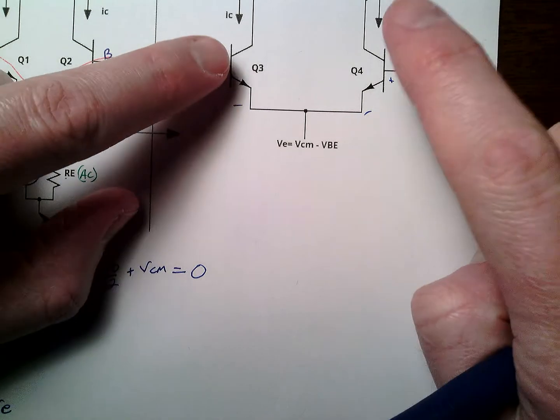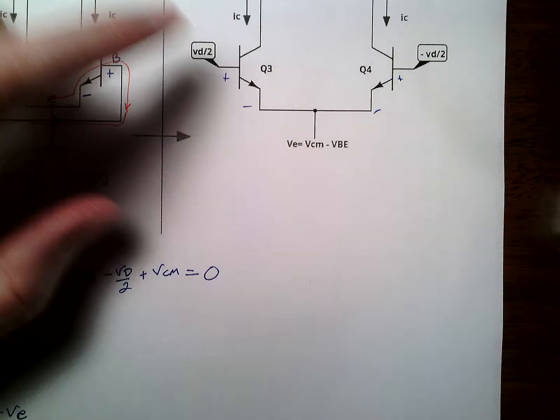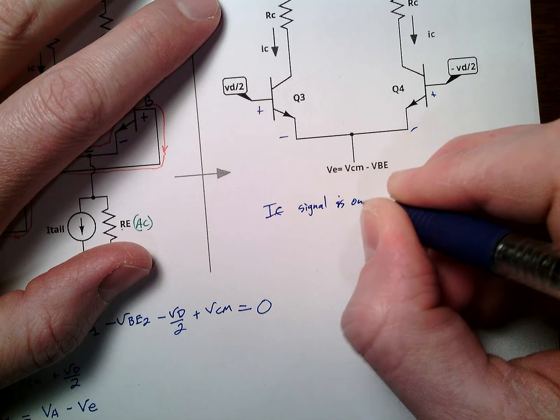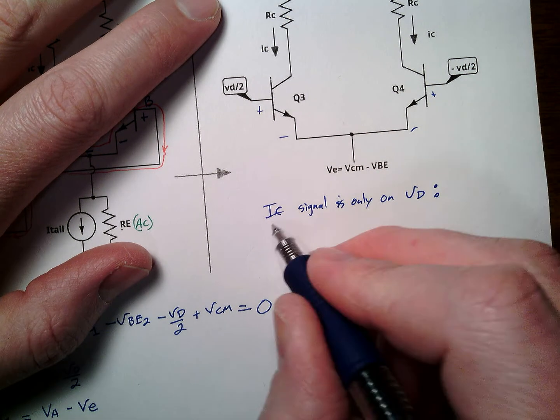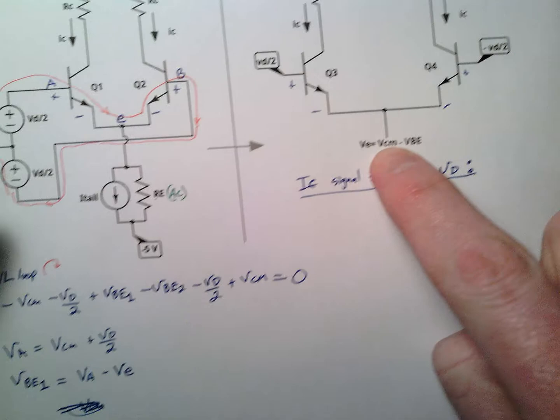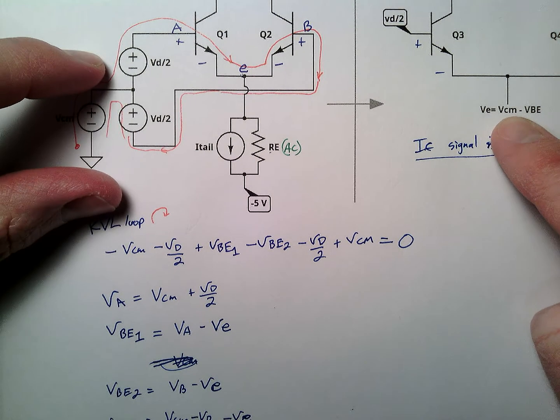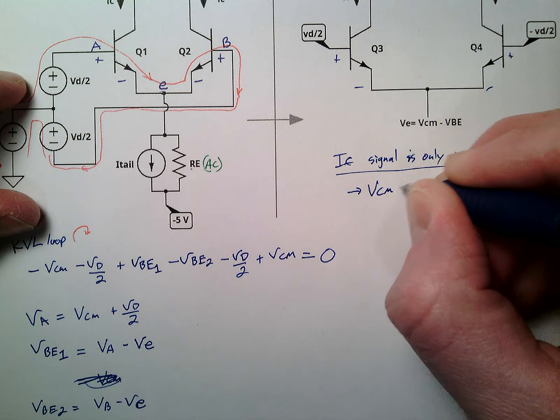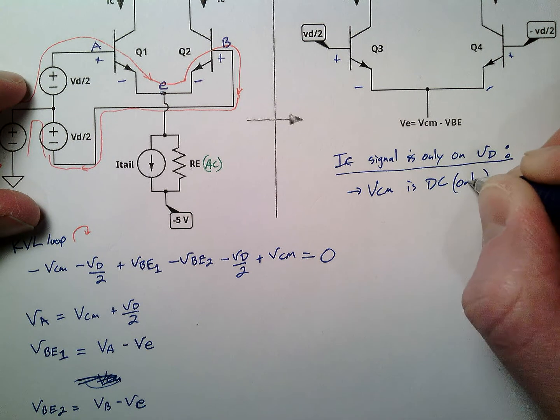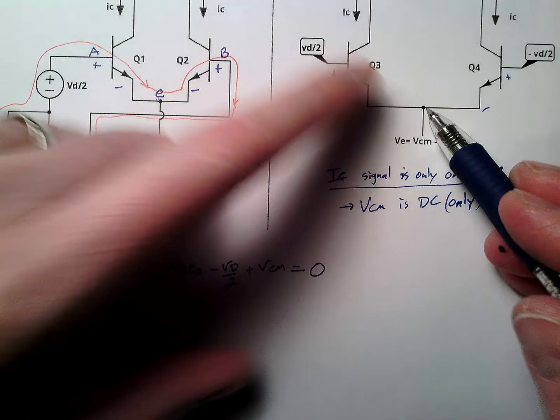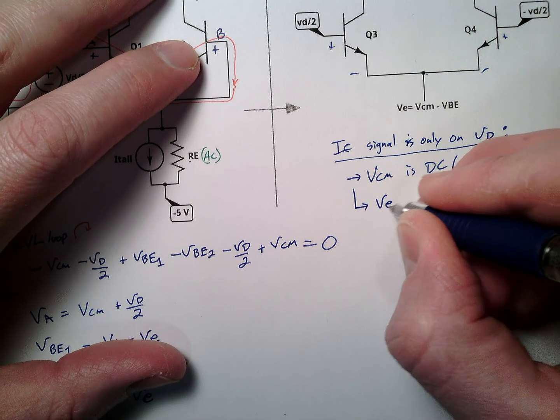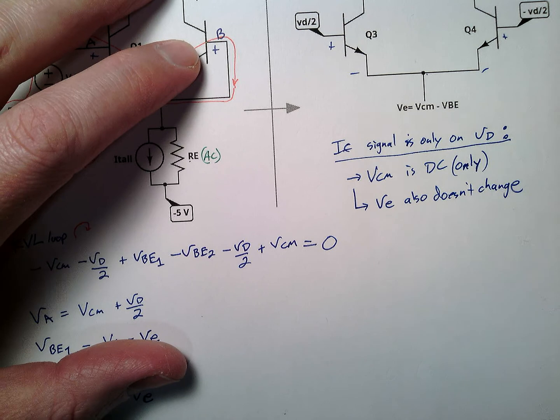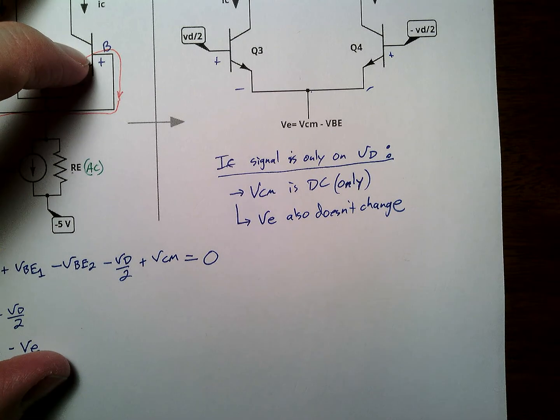But here's the thing. When we have this. But if our signal. If our signal is only on the difference. That means our common mode signal, which is way over here, is static. That means VCM is DC only. That means this node, then, node VE, also doesn't change.